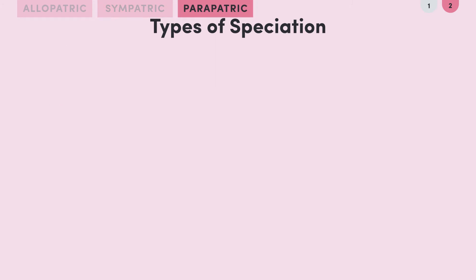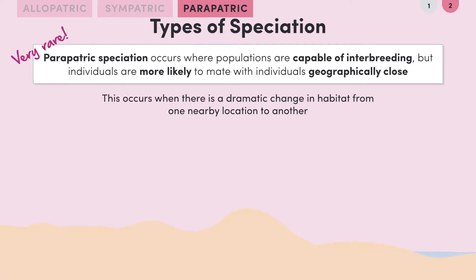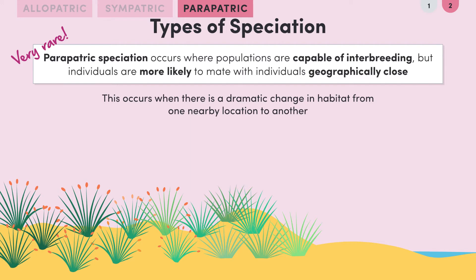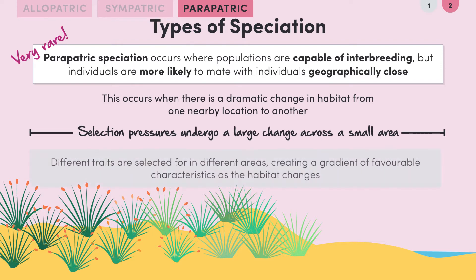Finally, let's look at parapatric speciation. Here, there's no specific physical barrier to breeding, so populations are capable of interbreeding, but individuals don't really mate randomly — they're more likely to mate with individuals geographically close to them. Parapatric speciation is very rare and occurs when there is a dramatic change in habitat from one nearby location to another, like a population of grasses that spans along a shoreline. In this environment, the selection pressures undergo a huge change in a relatively small area as you move away from the sea, meaning different traits will be selected for in different areas, and a gradient of favourable characteristics forms as the habitat changes.